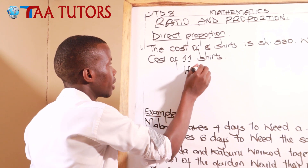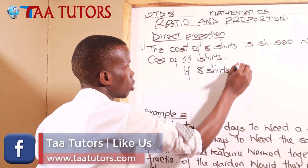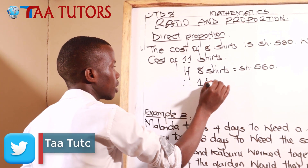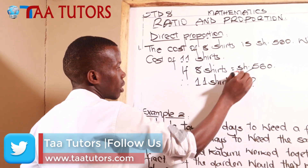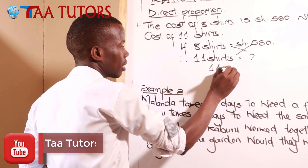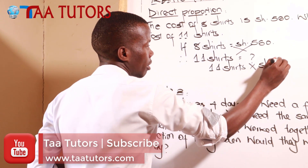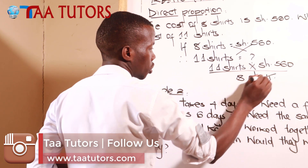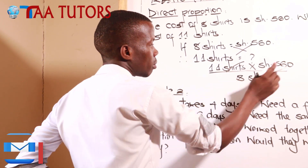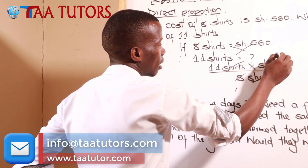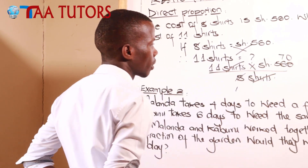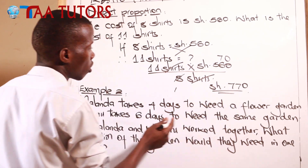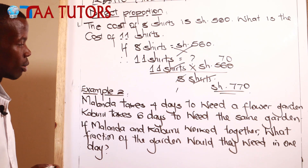Method one: if eight shots equals 560 Kenya shillings, therefore 11 shots equals what? You cross multiply, so you get 11 times 560 Kenya shillings all over eight. Eight divided into 560 goes 70 times, then 70 multiplied by 11 gives you 770 Kenya shillings. That is the cost of 11 shots.